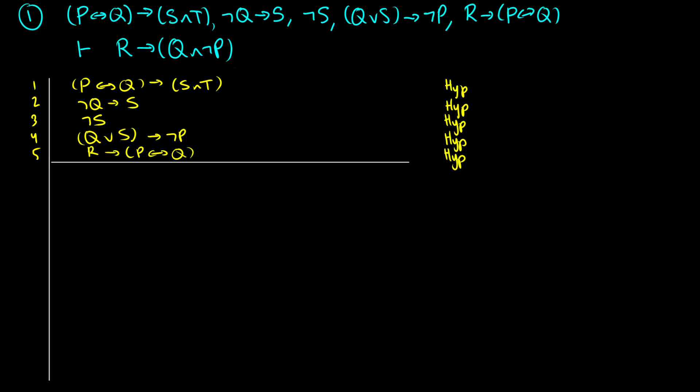Question one has quite a few hypotheses, and we have to prove that if we have all those hypotheses, we get R→(Q∧¬P). I've written our five hypotheses down below: P↔Q→(S∧T), ¬Q→S, ¬S, (Q∨S)→¬P, and R→(P↔Q).